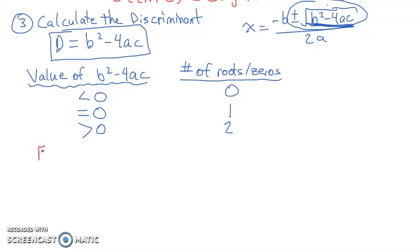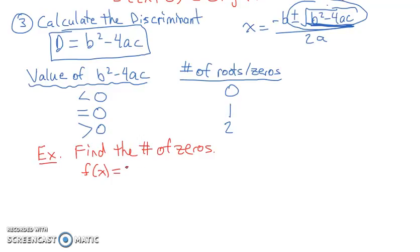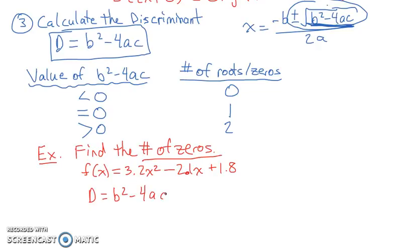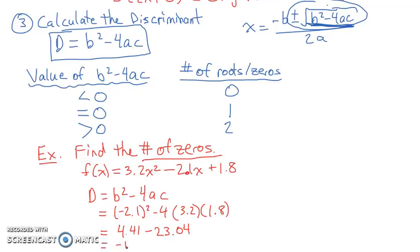Let's look at an example. Find the number of zeros of f(x) = 3.2x² - 2.1x + 1.8. Since we only need the number of zeros, we use the discriminant: b² - 4ac = (-2.1)² - 4(3.2)(1.8) = 4.41 - 23.04 = -18.63, which is less than 0. Therefore, it has no roots.